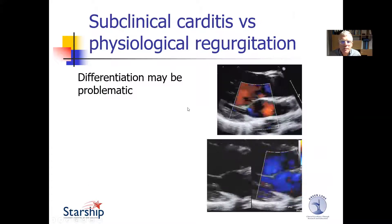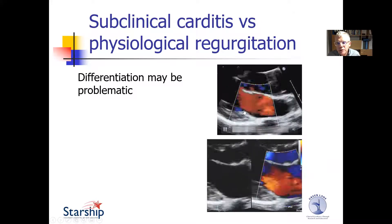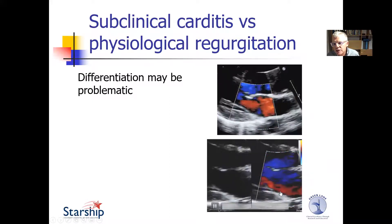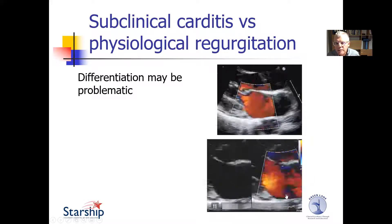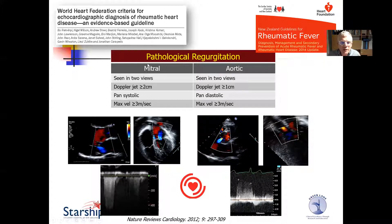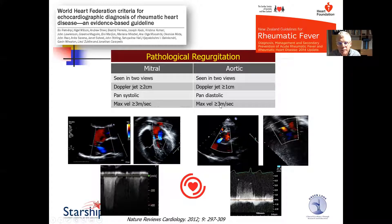Differentiating from physiological regurgitation can be difficult. This minor jet is not pan-systolic and has short penetration into the left atrium, while this other jet appears systolic with a much longer jet into the left atrium. Thanks to Beau Remenyi, Nigel Wilson, and others, pathological regurgitation has been fairly robustly defined. The criteria for pathological mitral regurgitation include a Doppler jet of more than two centimetres seen in two views, the jet is pan-systolic with a maximum velocity of more than three metres per second. The aortic criteria are similar, though slightly different.